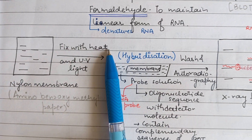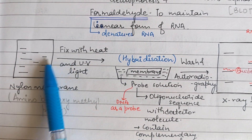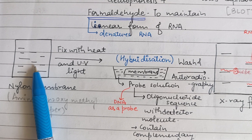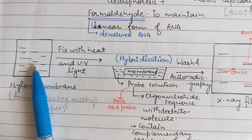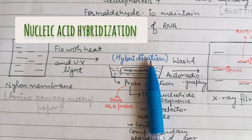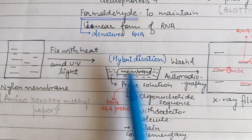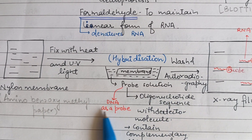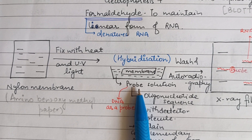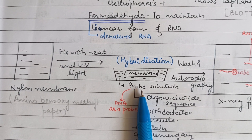Now that blotting is complete and all RNA bands have transferred onto the membrane, we need to fix the RNA strands. We fix them with heat treatment at around 80°C or with UV light. After fixing the RNA bands on the nylon membrane, the next step is nucleic acid hybridization — the main principle of Northern and Southern Blotting. The nylon membrane is placed in a probe solution containing DNA as a probe. The probe is a complementary sequence synthesized in the lab and is always single-stranded.